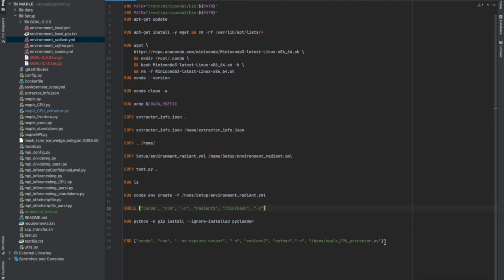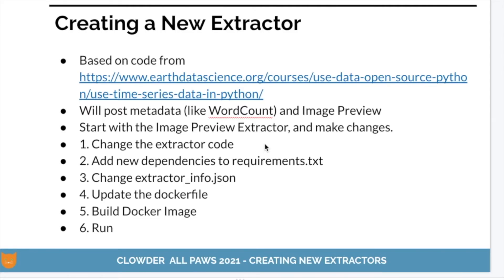That's about the end of the overview. Now in this section, I'm going to create a new extractor step by step. I'm adapting code from an earth science tutorial that uses time series data with pandas DataFrames. It's going to both post metadata like we saw with word count, and also upload an image preview. I'm going to start with a copy of the image preview extractor and make some changes. The steps are: change the extractor code, add new dependencies to the requirements file, fix the extractor_info.json, update the Dockerfile, and then show how to build the Docker image and run it.